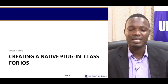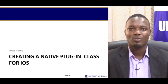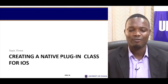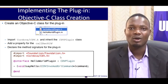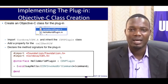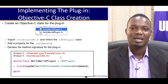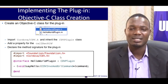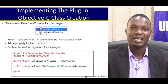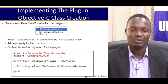Now we want to look at how we would create a similar thing like we saw earlier for Android, and see how we are going to create that for iOS. Creating or implementing a plugin for iOS in Objective-C requires two things: one is the Objective-C class, and then secondly we have the JavaScript wrapper.